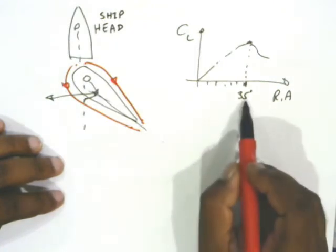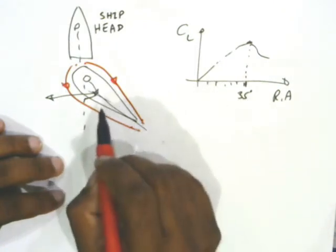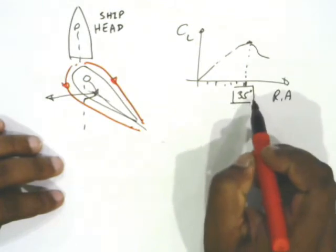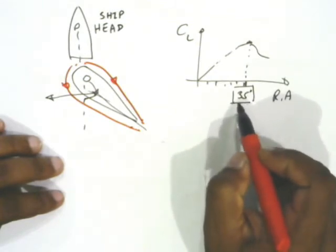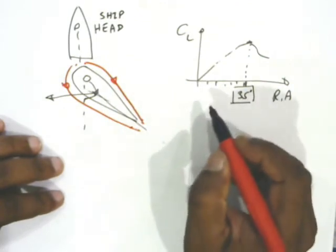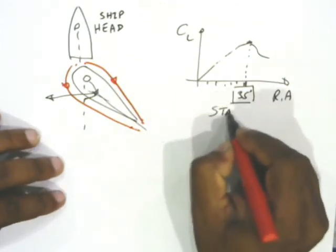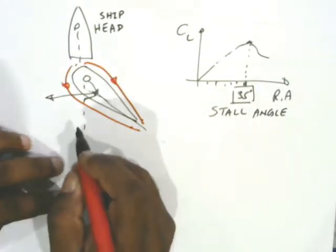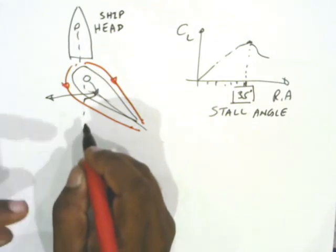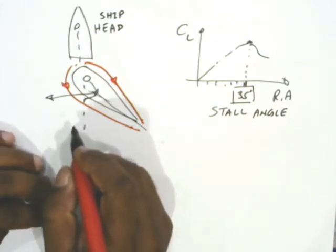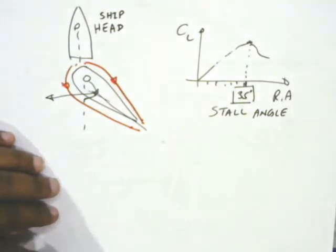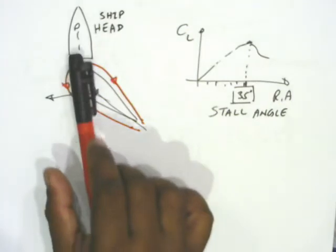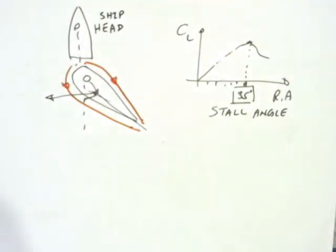For this shape, the maximum occurs around 35 degrees, which is why most ships have a maximum rudder angle of 35 degrees. This angle is called the stall angle. The maximum rudder lift occurs at this point, and beyond it the lift is going to stall.